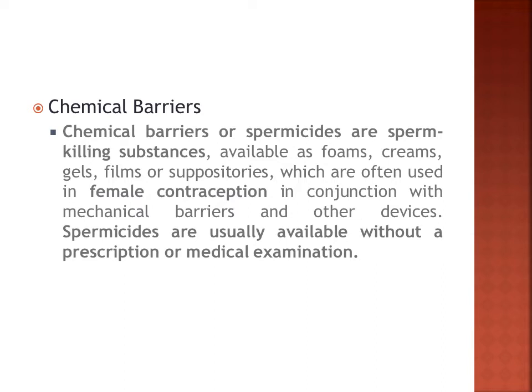Next we have chemical barriers, specifically spermicides. Spermicides are sperm-killing substances available as foams, creams, gels, films, or suppositories, often used in female contraception in conjunction with mechanical barriers. They are usually available without a prescription. Spermicides are placed on the genitals, and while ejaculation can still occur, the spermicide will kill the sperm before it reaches the uterus or before fertilization occurs.